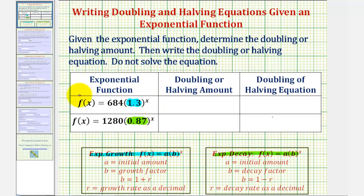Because this first exponential function is exponential growth, we'll be finding the doubling amount, which would be twice the amount of the initial value, where the initial value here is 684. So to find twice 684, we'll multiply 684 by two. The doubling amount is 1,368.